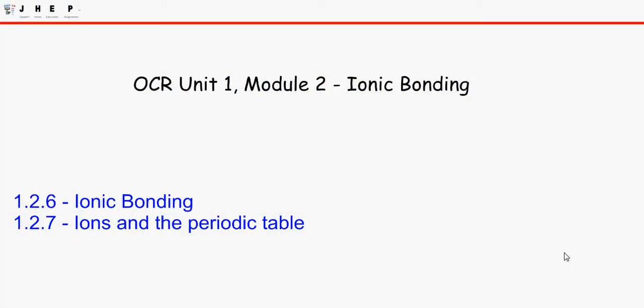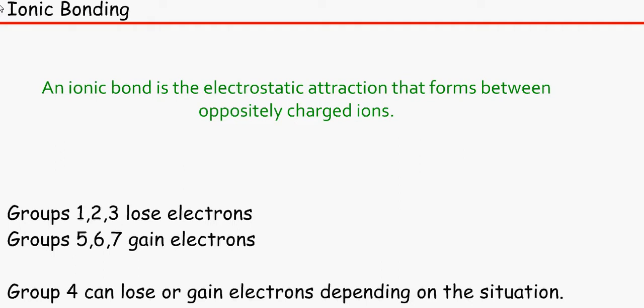Hello and welcome to ionic bonding. The first thing you need to know is that an ionic bond is the electrostatic attraction that forms between oppositely charged ions. Remember in GCSE when we said that metals in groups 1, 2 and 3 lose electrons to form a positive ion, and the ones on the end like groups 5, 6 or 7 gain electrons and become negative ions. Those are oppositely charged.